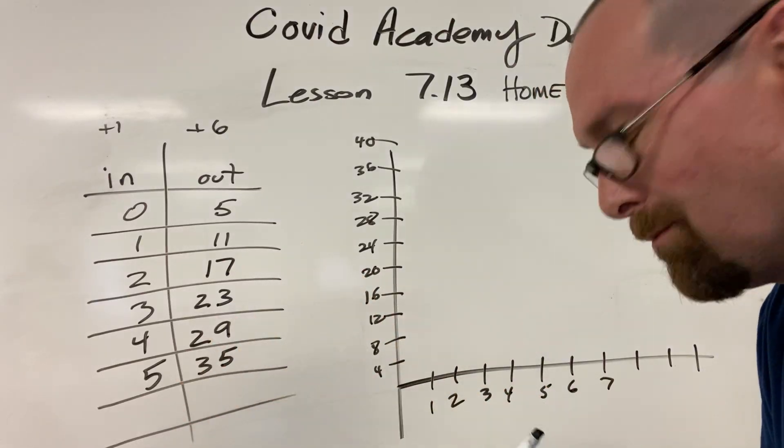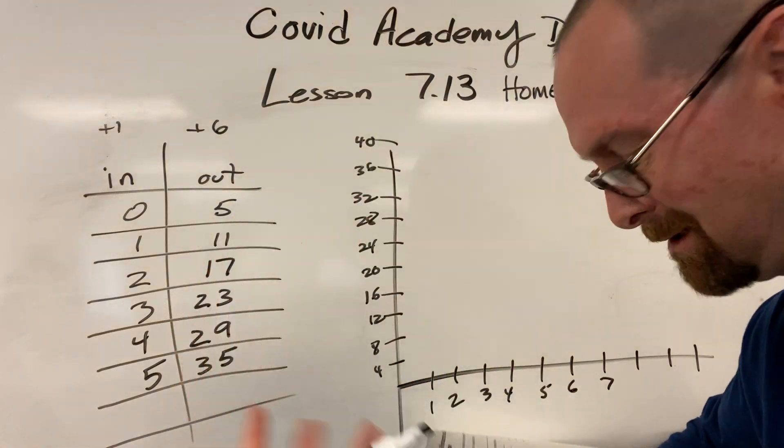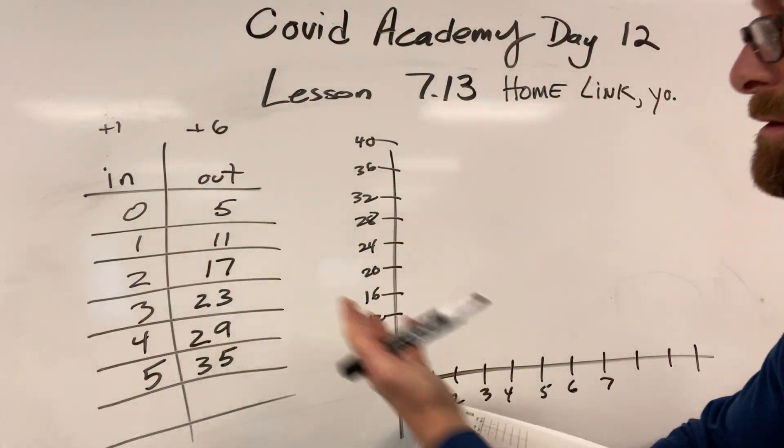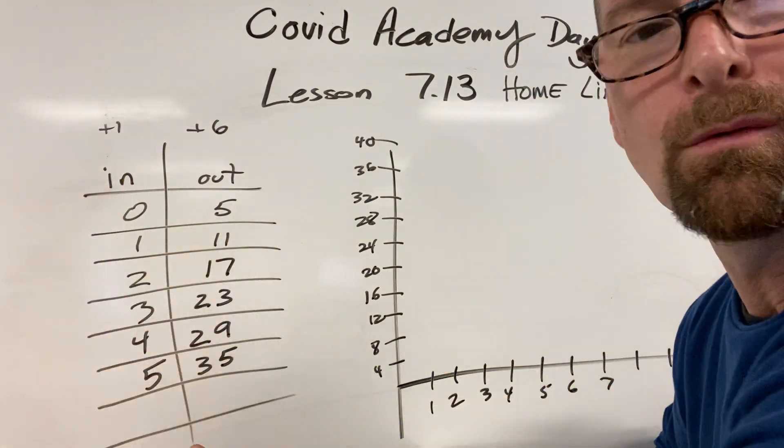Now what you're doing is homelink 7.13. First, you fill out the table. This one goes up by 6, this one goes up by 1.